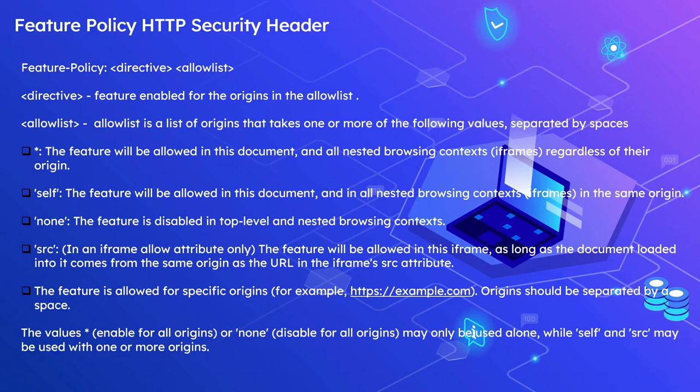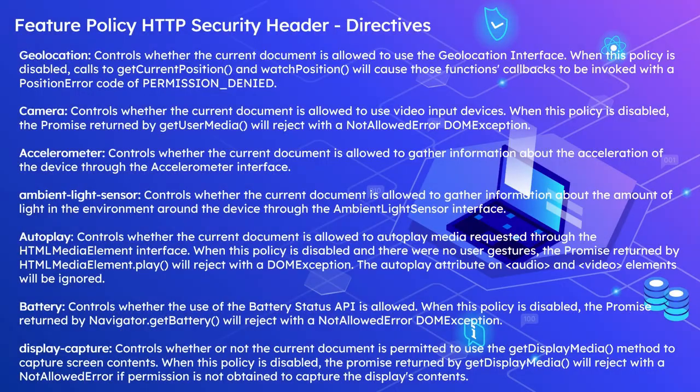You can also specify a list of origin URLs, for example https://example.com, separated by spaces — you can have multiple origin URLs to enable the feature for specific origins. The value star enables the feature for all origins. None disables the feature for all origins. Star and none can only be used alone and cannot be combined with other values, but self and src can be combined with an origins list, meaning you can specify additional origins along with self and src.